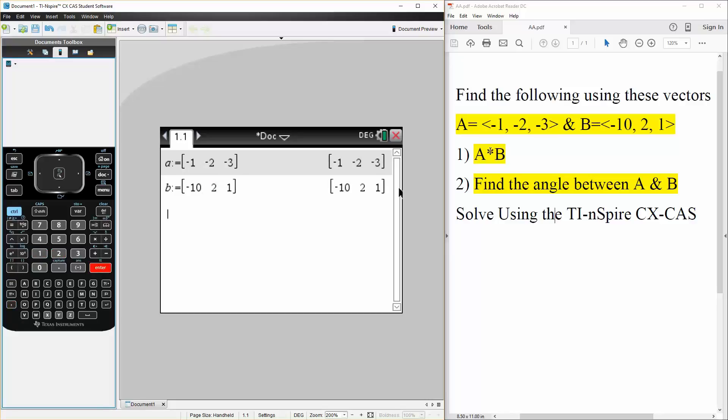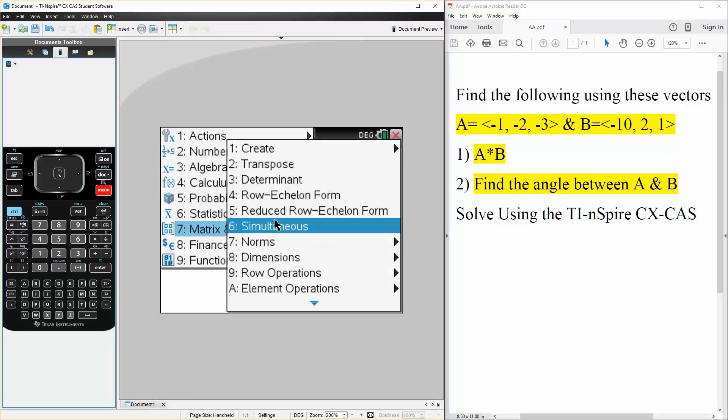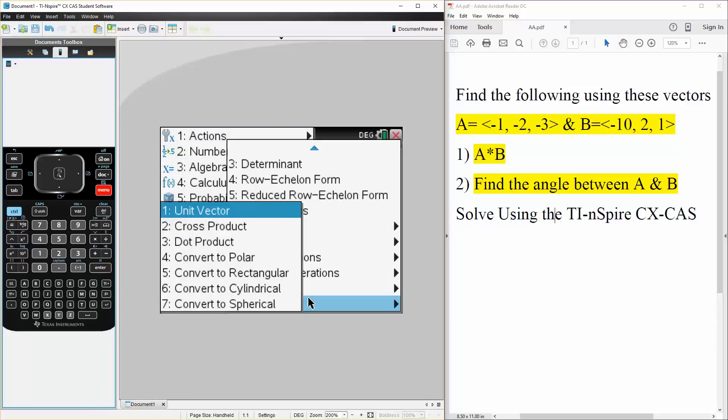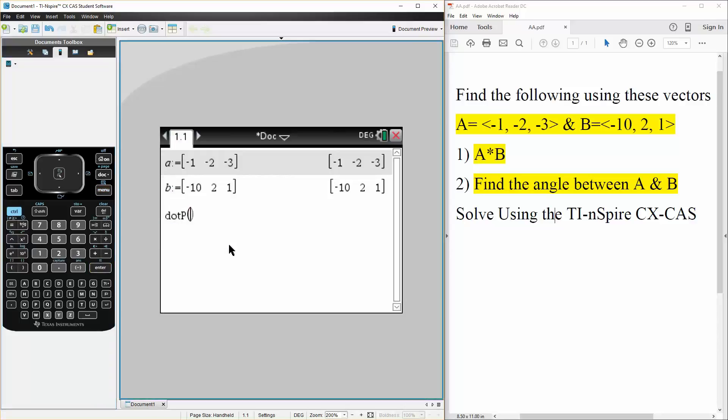Now doing the dot product is very easy in the TI. We hit menu, matrix, we scroll down to C, vector, we hit dot product. So we do A, comma, B to represent the dot product of A times B, hit enter, and the dot product of A, B is 3.